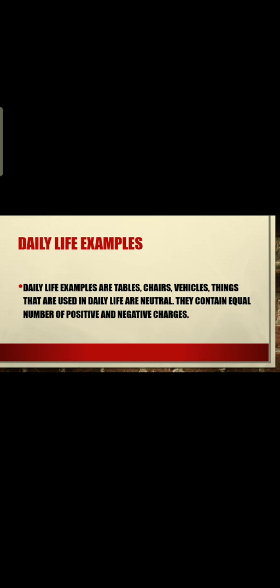We would study the daily life examples of charges — how charges are present on anything. Daily life examples such as tables, chairs, and vehicles — things used in daily life — are neutral. They contain equal number of positive and negative charges. Basically, charges are present on everything in the universe; all these things are neutral, meaning they contain equal numbers of positive and negative charges.